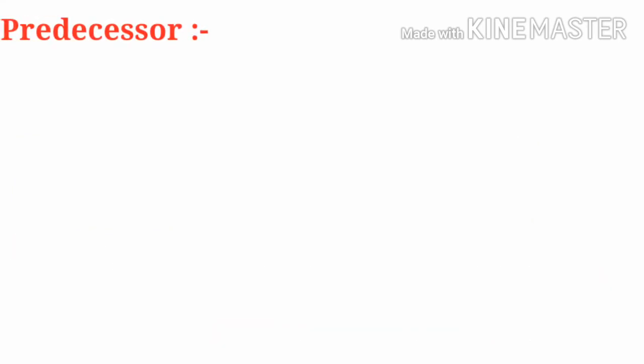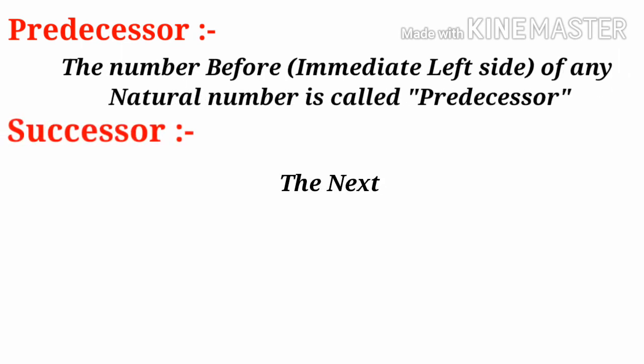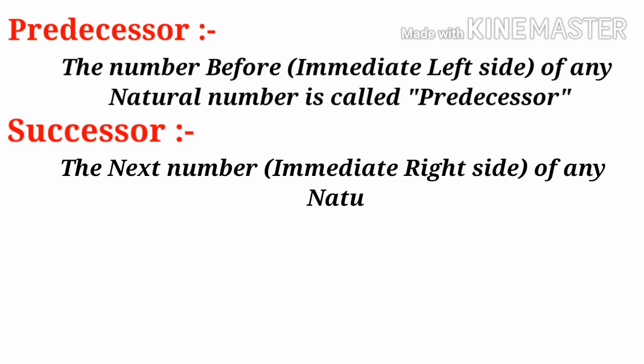What is predecessor? The number before any natural number, that is immediate left side, is called predecessor. The next number, that is immediate right side, of any natural number is called successor.